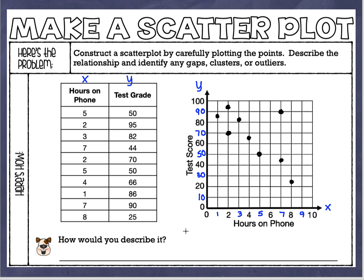Take a look at this scatterplot and think — does it have a positive correlation, where as hours on the phone increase the test scores also increase? Or is it a negative correlation, where as hours on the phone increase the test scores decrease? When I look at this, I see definitely a negative correlation because the points from left to right are going down — starting up near 90–95 and by the end they're down around 25. So this graph has a negative correlation.